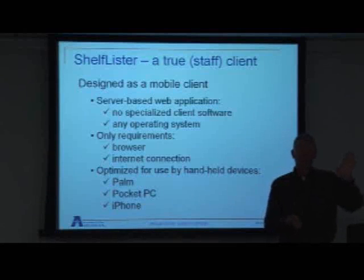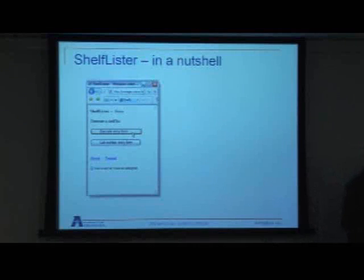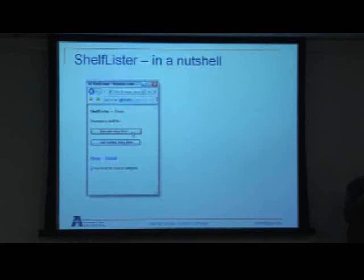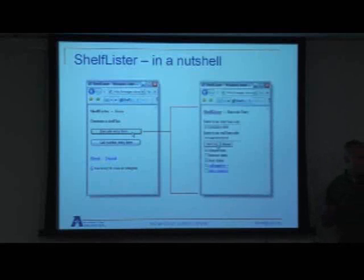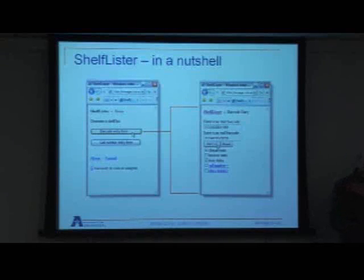That's a shelf list whether the items are on the shelf or not. This screenshot shows what it looks like — it is optimized for a PDA, although it can be used on a laptop or at a desk with a PC. That's a picture of the barcode entry form. It's fairly simple. When you design for a PDA, you try to get everything off the screen that's not absolutely necessary.